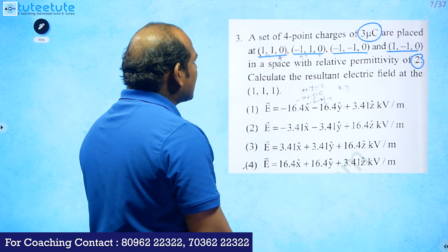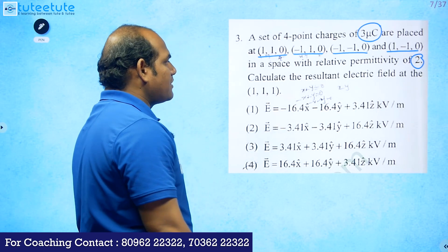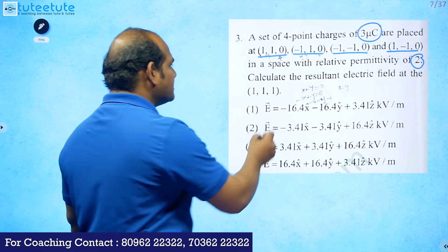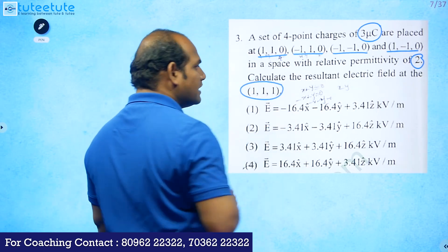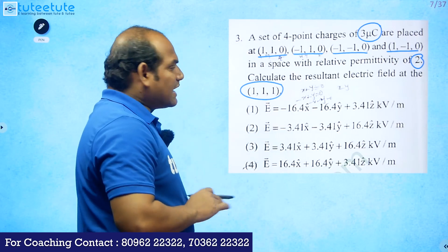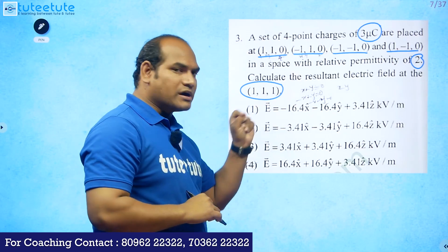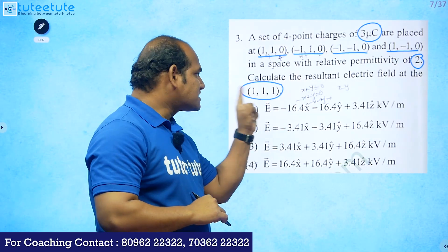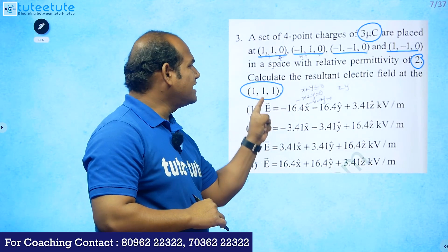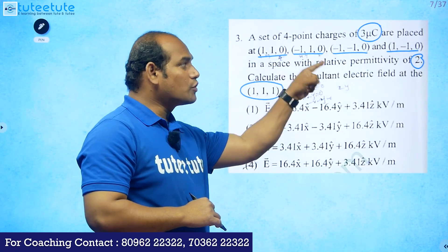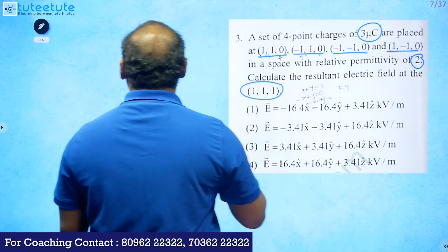The space has a relative permittivity of two — that is epsilon_r. Calculate the resultant electric field at (1,1,1). At this particular point we have to calculate the electric field, and it has three coordinates, meaning it is in space, while the four source points are on the x-y plane.